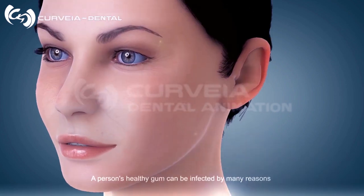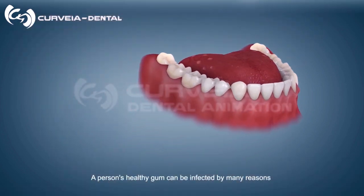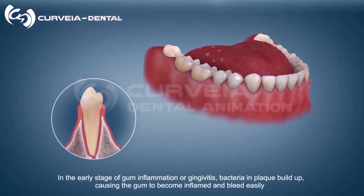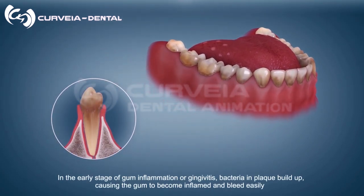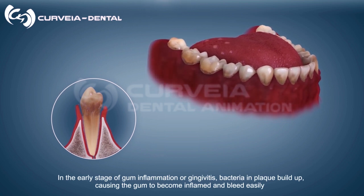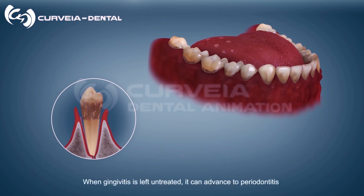A person's healthy gum can be infected for many reasons. In the early stage of gum inflammation, or gingivitis, bacteria in plaque buildup cause the gum to become inflamed and bleed easily. When gingivitis is left untreated, it can advance further.